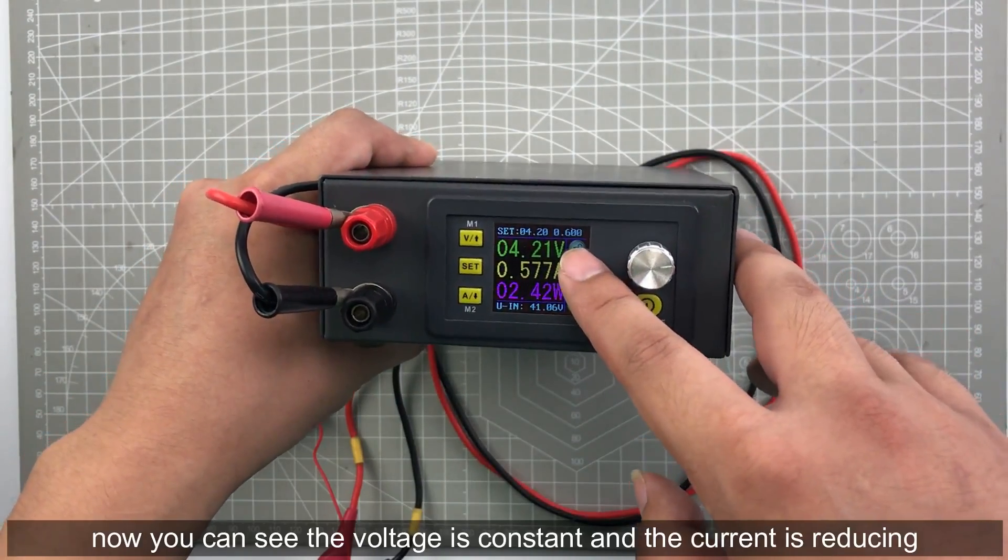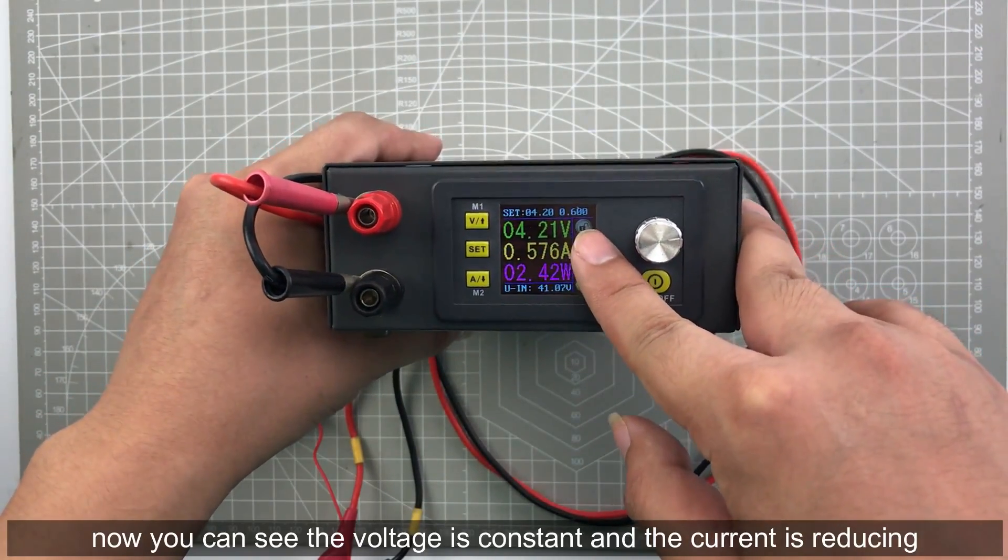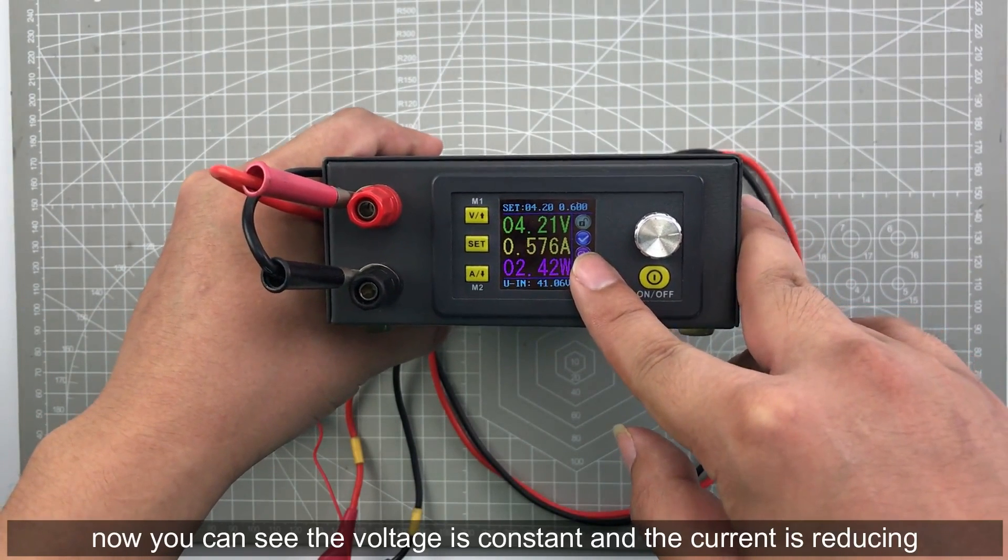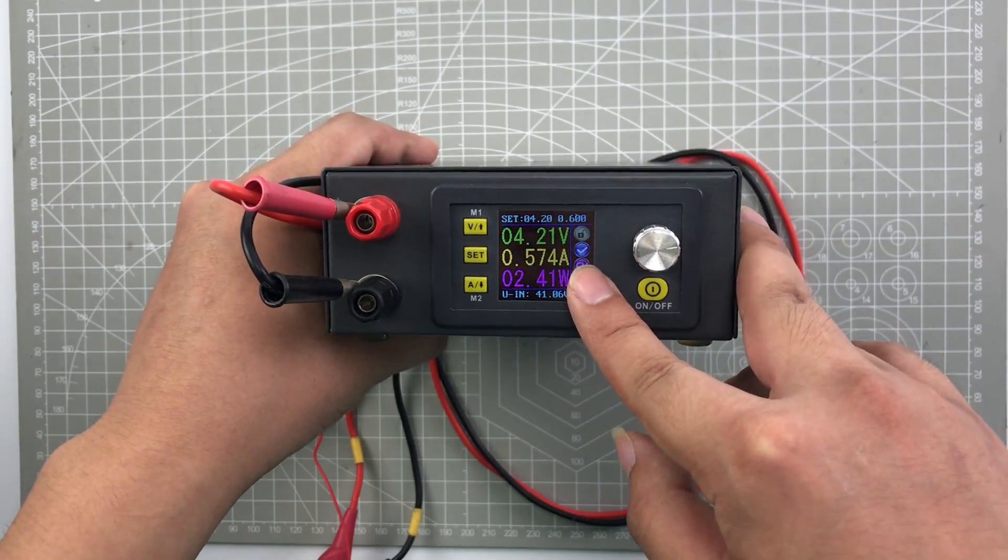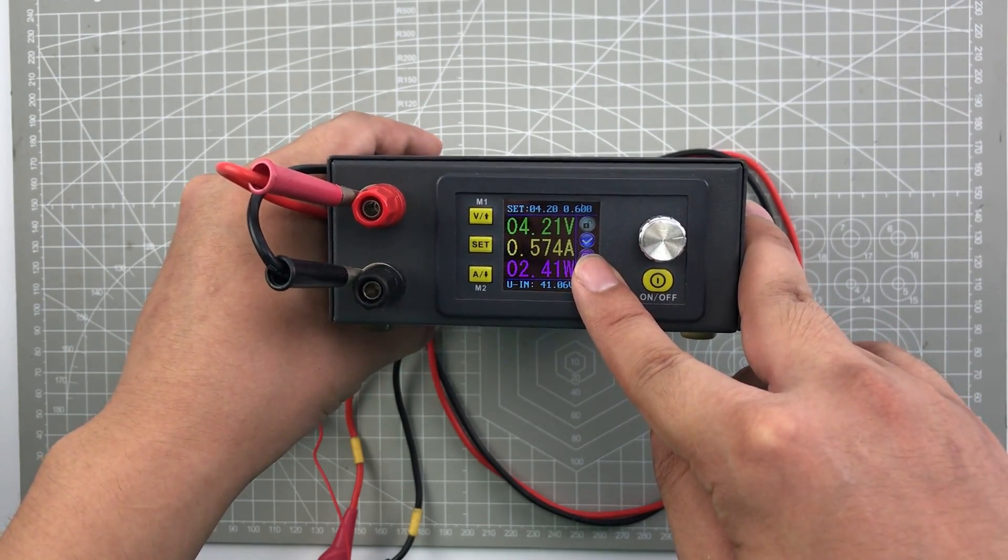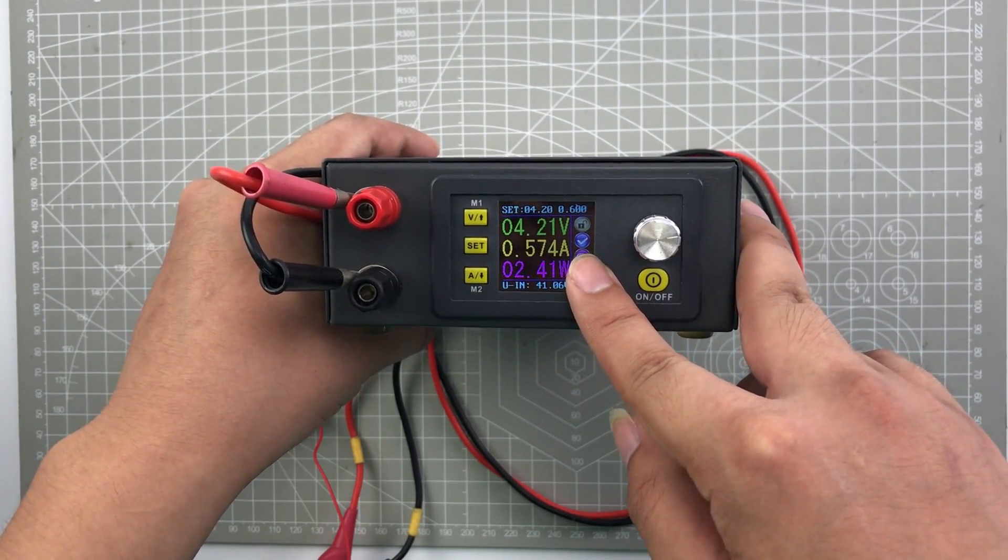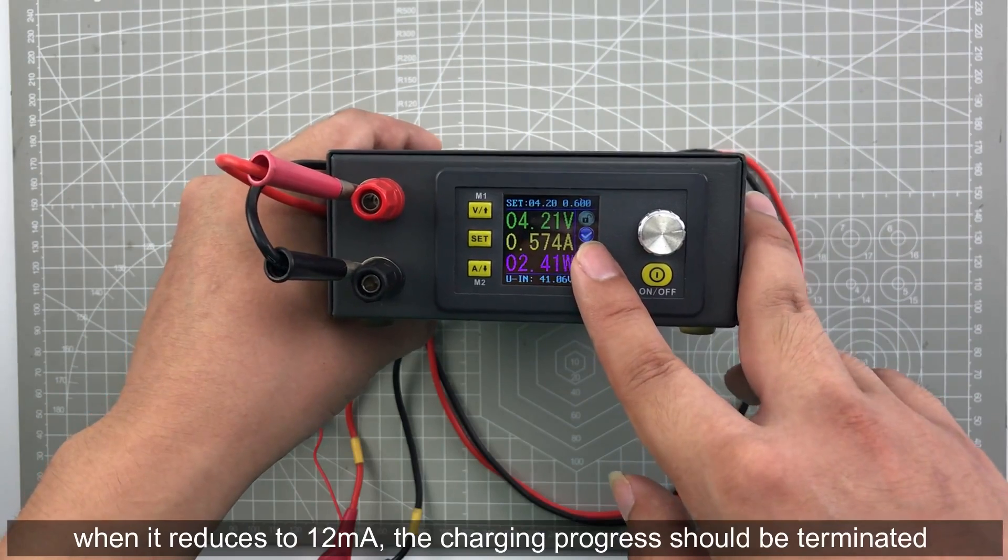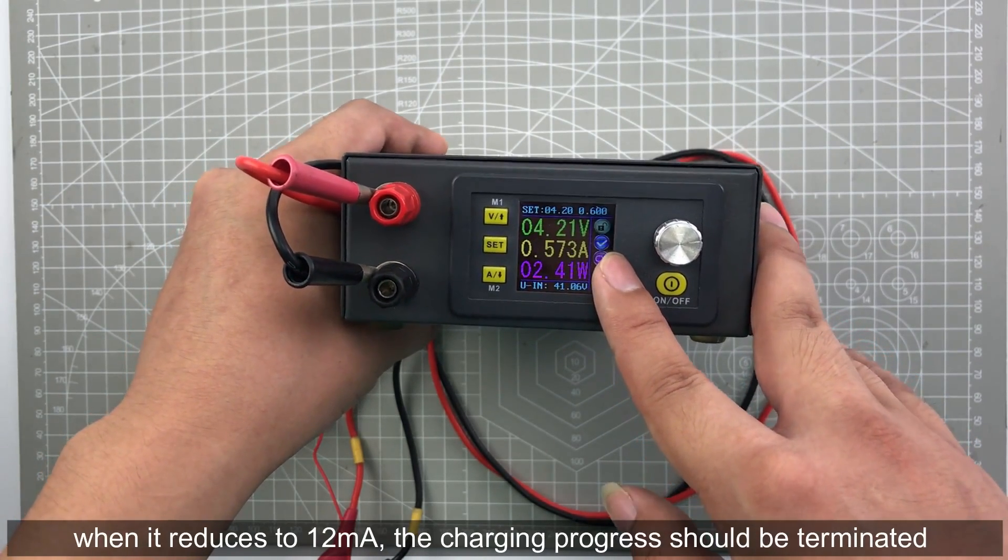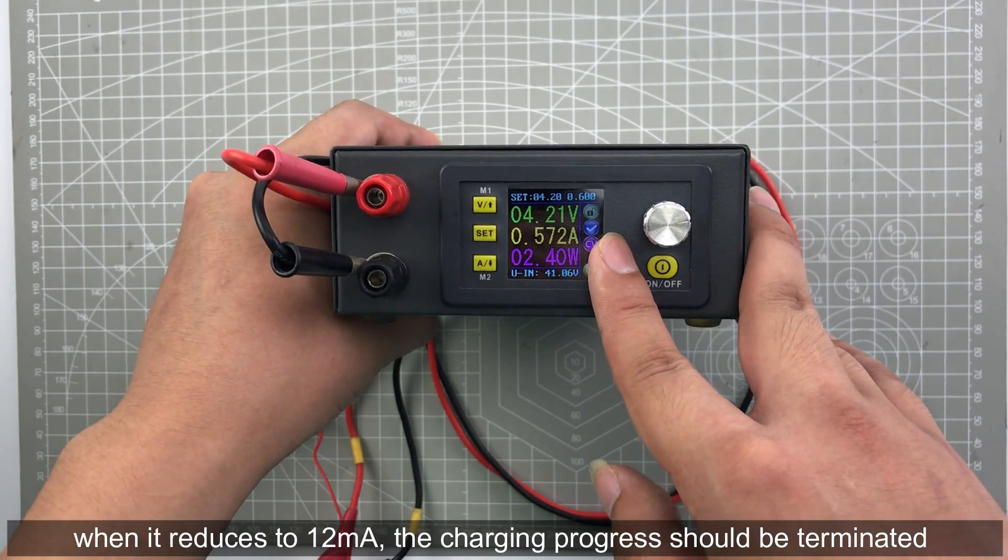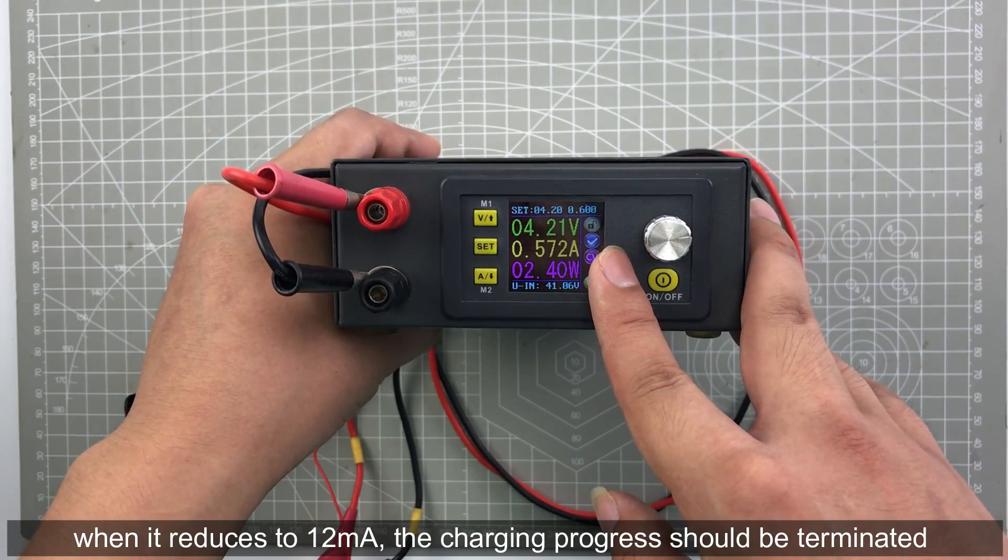Now you can see the voltage is constant and the current is reducing. When it reduced to 12 mA, the charging progress can be considered to terminate.